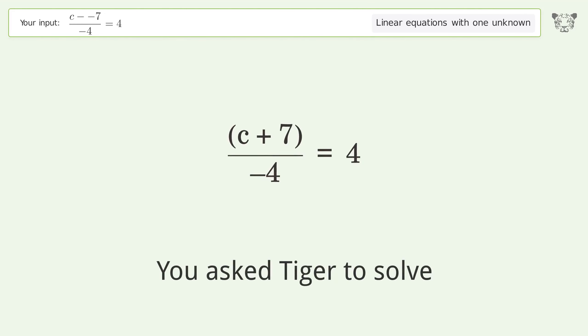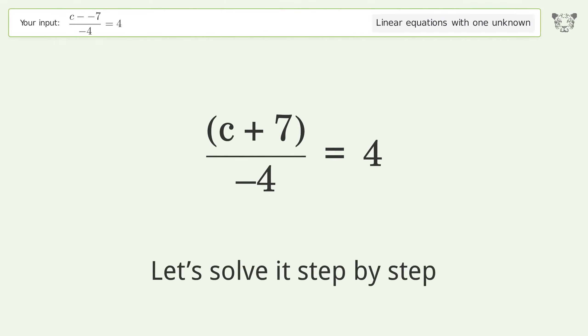You asked Tiger to solve this. It deals with linear equations with one unknown. The final result is c equals negative 23. Let's solve it step by step and simplify the expression.